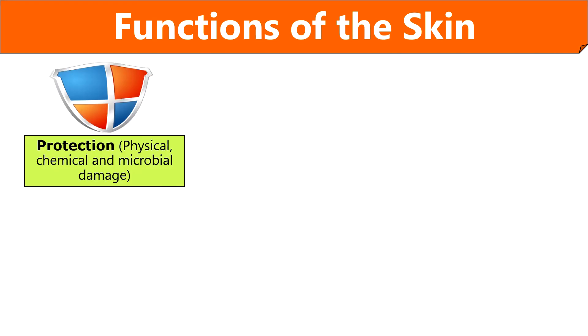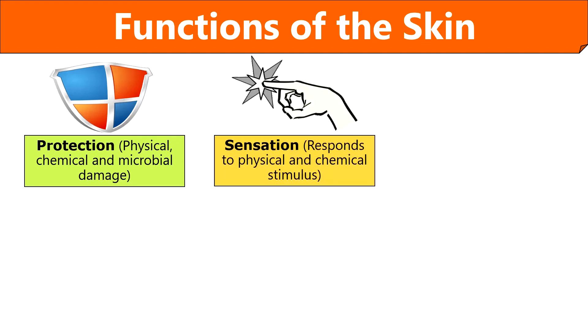Let us discuss some major functions performed by the skin. Skin covers our body and acts as a physical barrier between the internal organs and the physical, chemical, and microbial factors of the environment. Skin also comprises mechanoreceptors and thermoreceptors through which we can sense pain exerted through deep pressure and temperature.